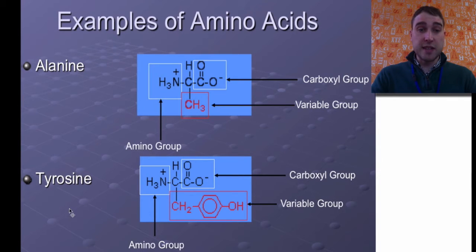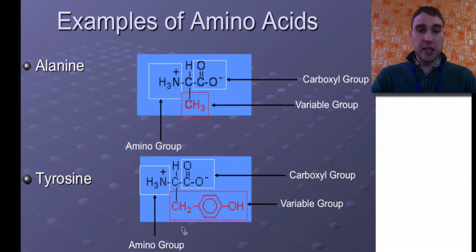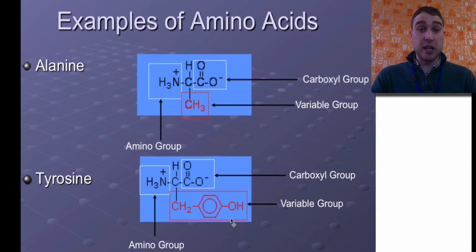If we look at tyrosine, again we've got the amine group, we've got the carboxyl group, and then our variable group down here is much more complicated. We've got a carbon, a benzene ring, and a hydroxyl group.